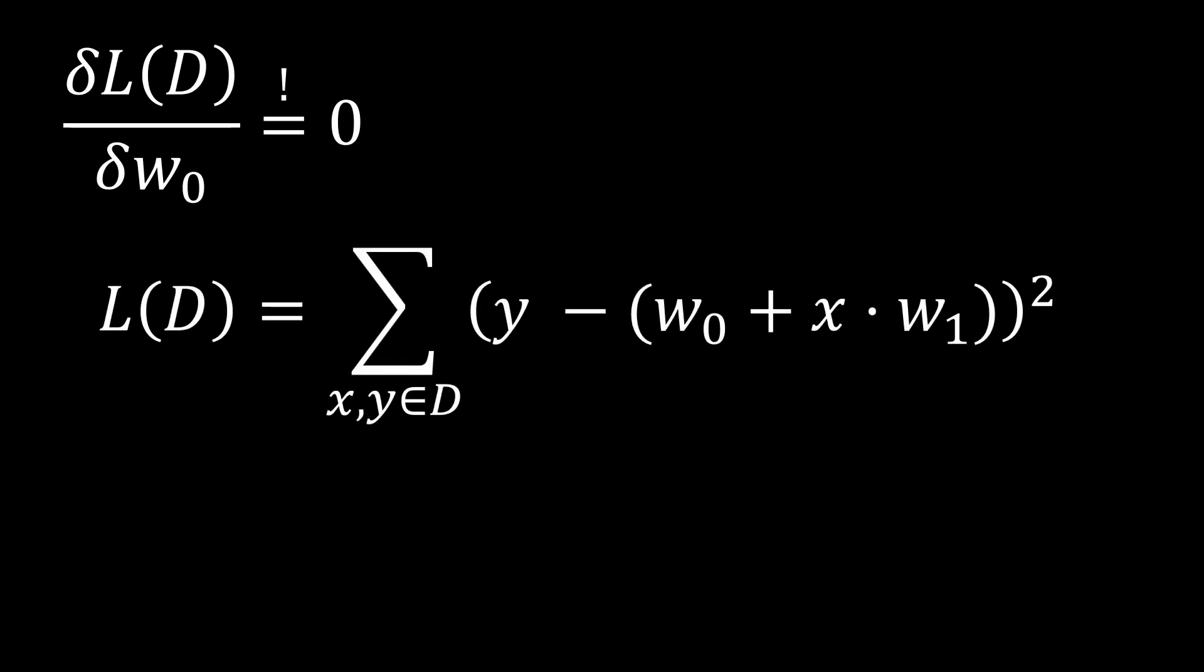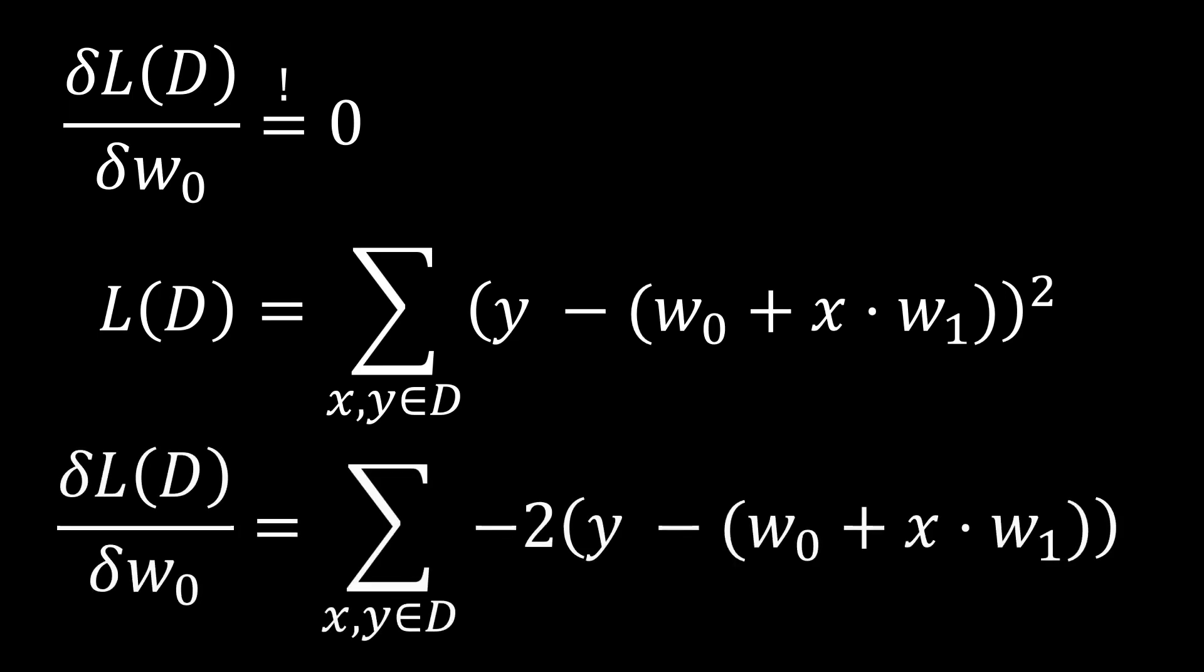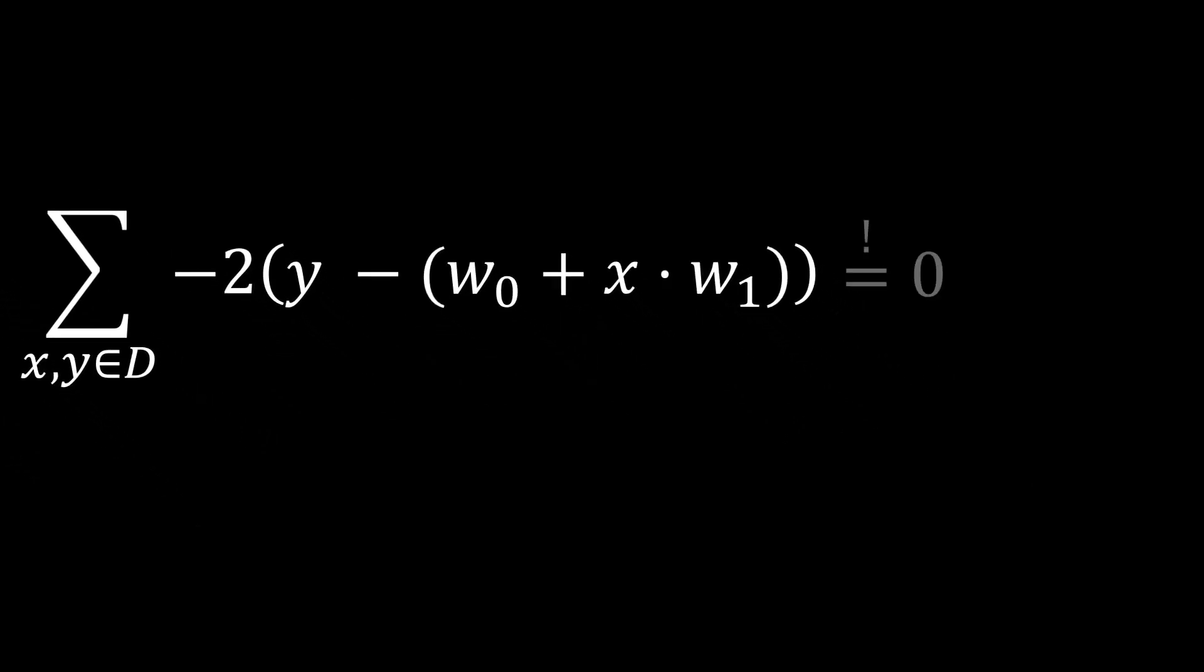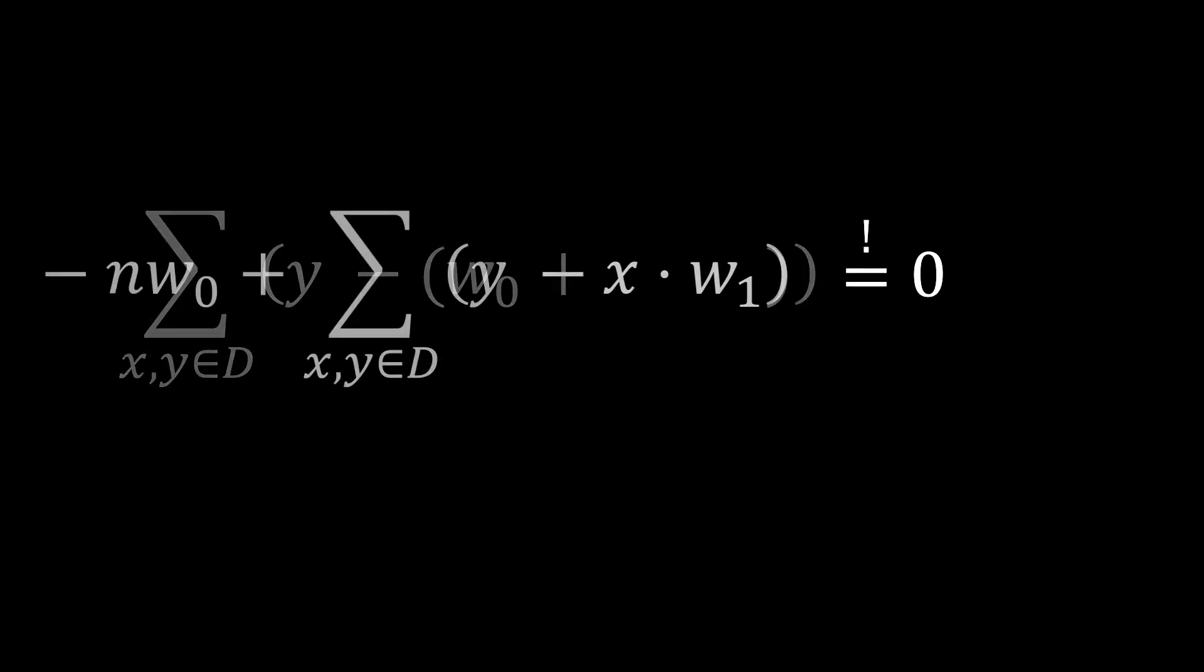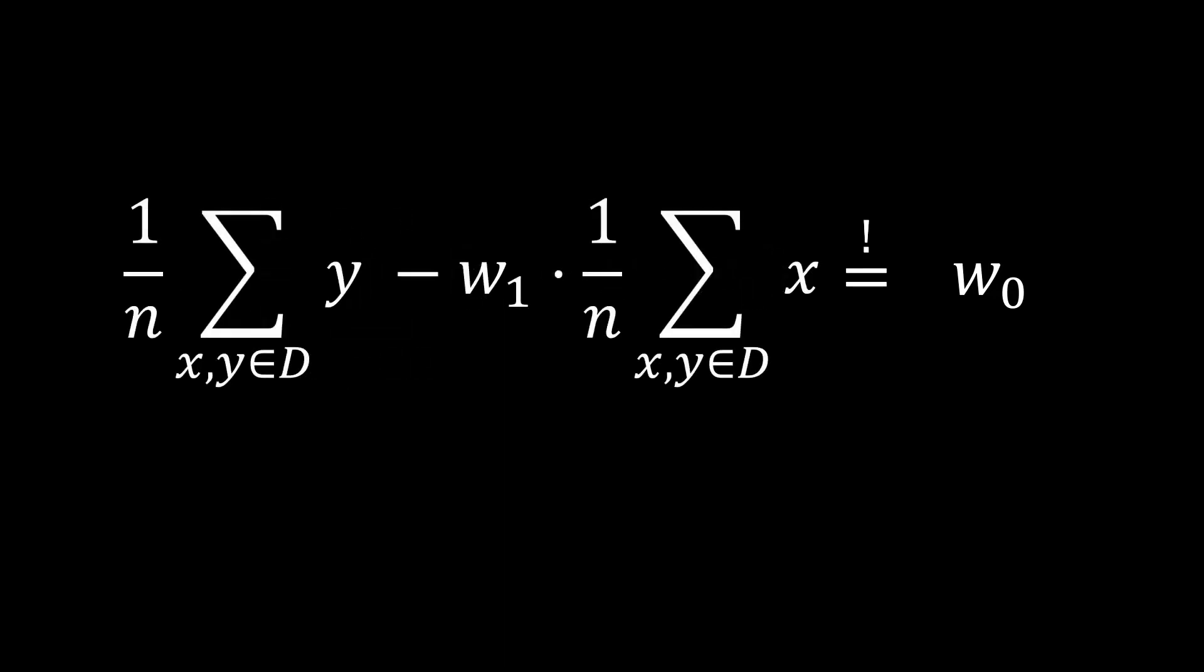Looking at the case of W0 first, let's write out the loss function given the weights W0 and W1. If we take the derivative with respect to W0, we get the following formula. We can now take this formula and set it to zero. Dividing both sides by minus 2 to eliminate the unnecessary factor and pulling W0 out of the sum we get to the following. Here we used N to denote the number of data points in our data set D. Rearranging and dividing by N, we can solve for W0. We can further split the sum on the left. We can see that the optimal value for W0 is given by the difference between the average Y value and W1 times the average X value of our data set.